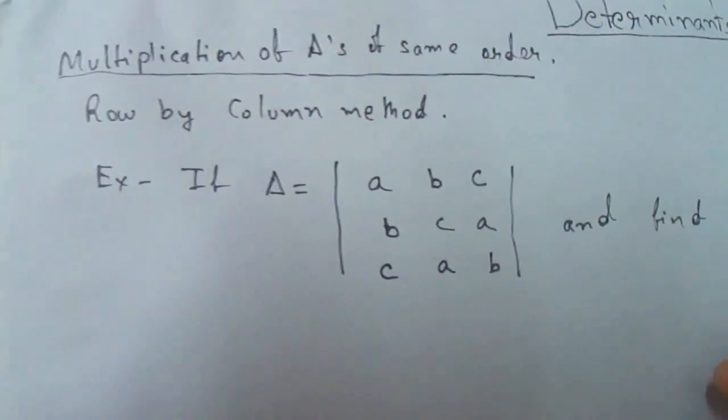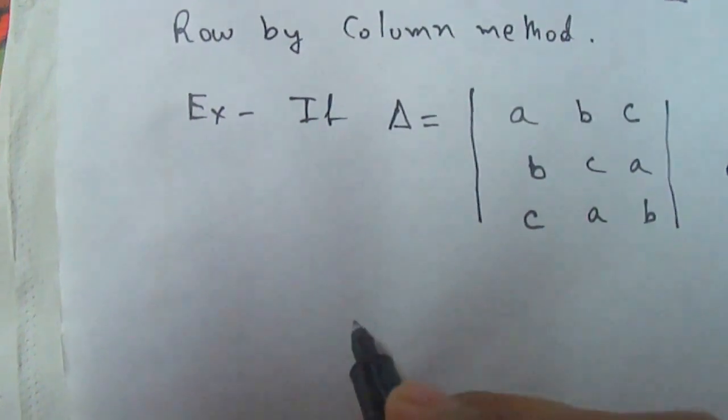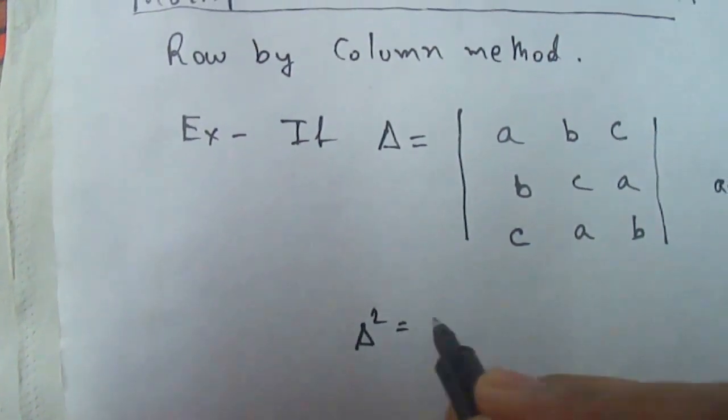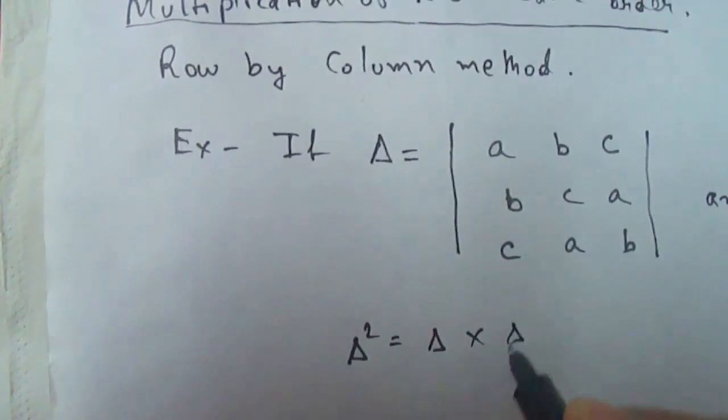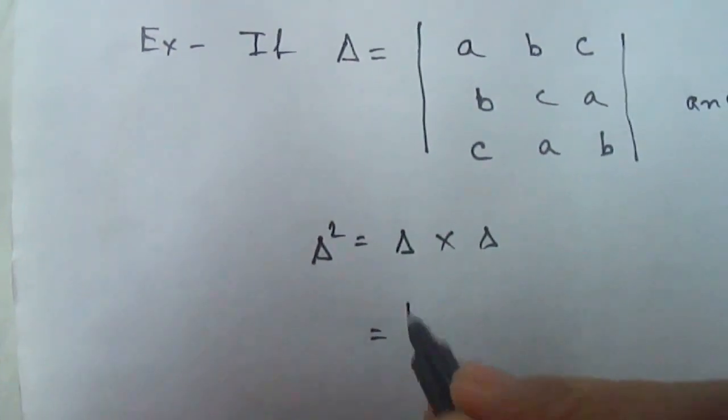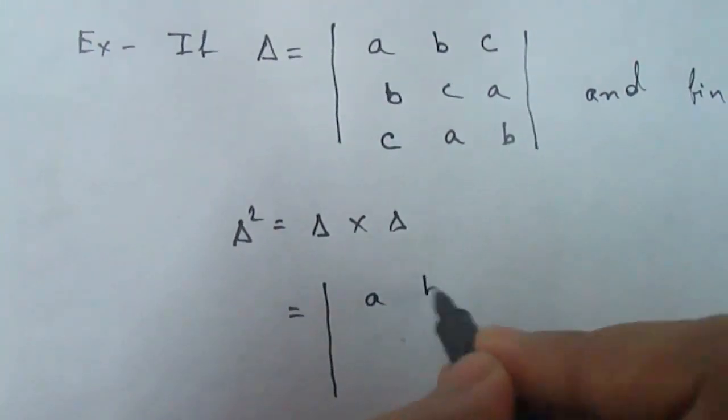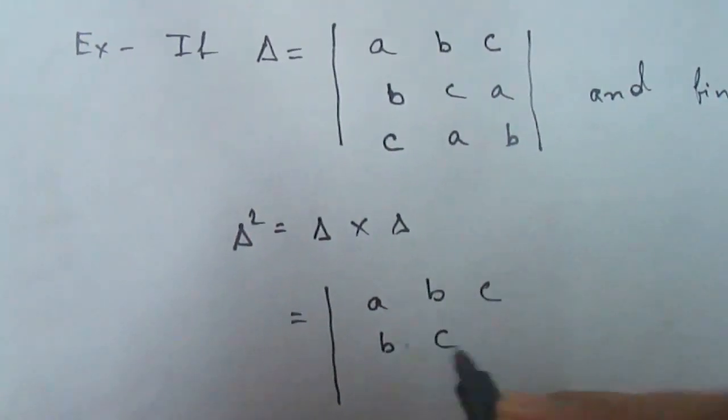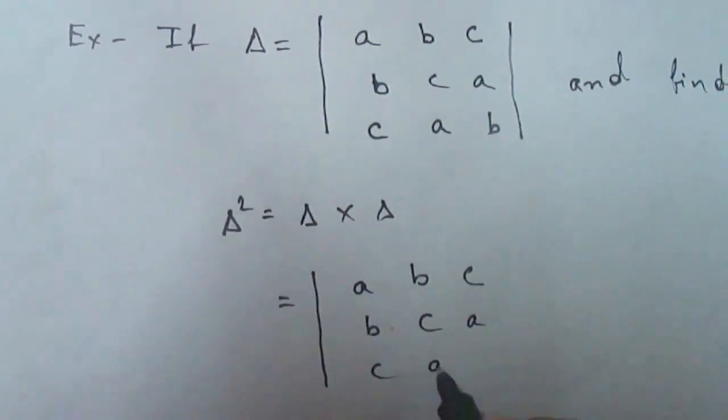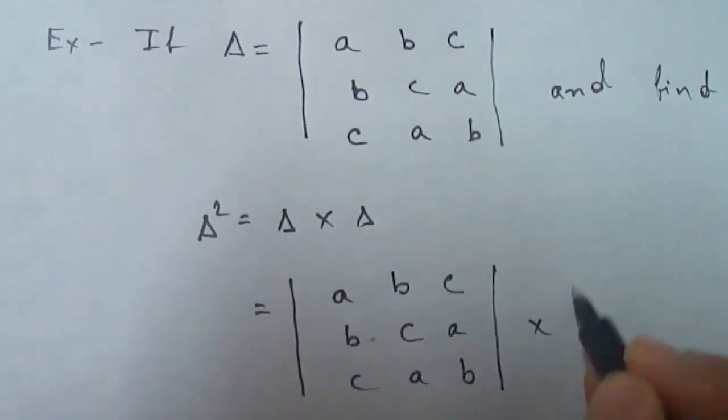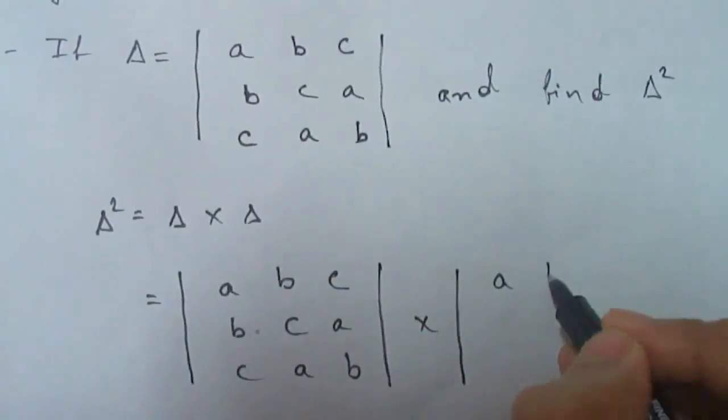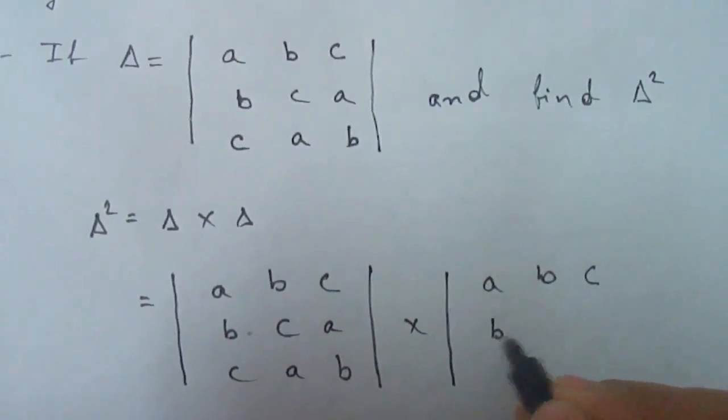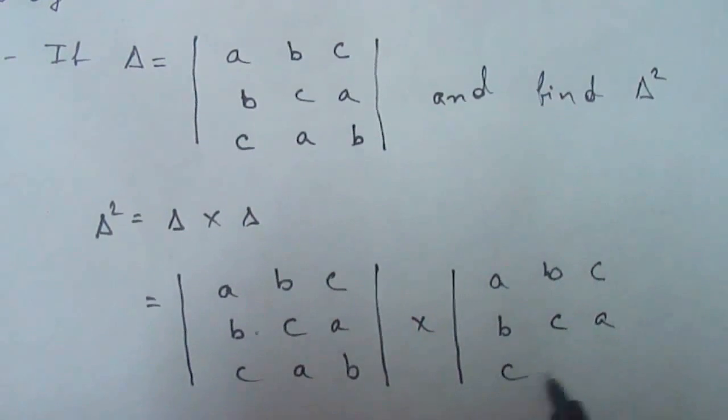Now we have to find del square. So what we need to do is, we can write del square as del into del. Now we will put del is abc, bca, cab, and here again abc, bca, cab.